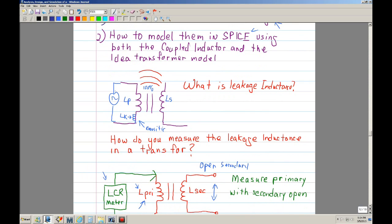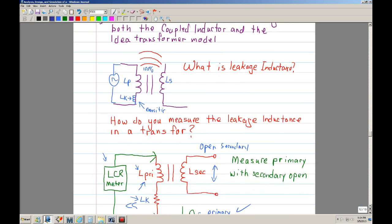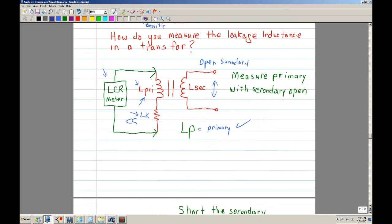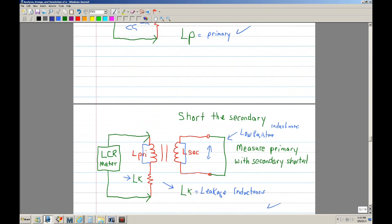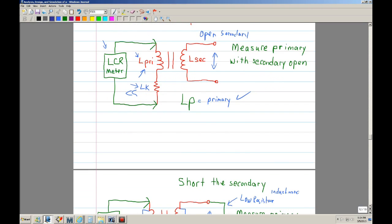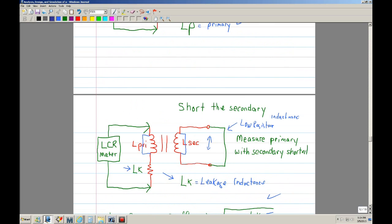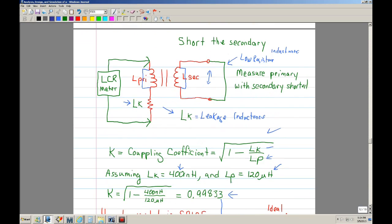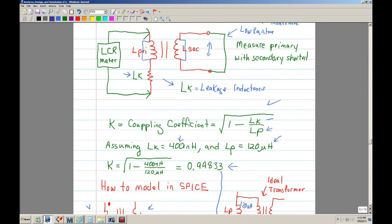I defined what leakage inductance is - basically a winding that doesn't get coupled. It causes inefficiencies and creates a spike in the MOSFET. I also showed how to measure the leakage inductance by taking inductance readings of the primary with the secondary open, then shorting the secondary and measuring the short circuit impedance.